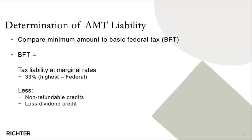This gives you, for AMT purposes, your net adjustable taxable income, to which you apply the AMT tax rate of 15%, less allowable non-refundable tax credits. Let's keep in mind donations here. This gives you your minimum amount from an AMT perspective. Then you compare it to your basic federal tax, which we'll say is 33% federally. And then you pay the greater of AMT or your federal tax.